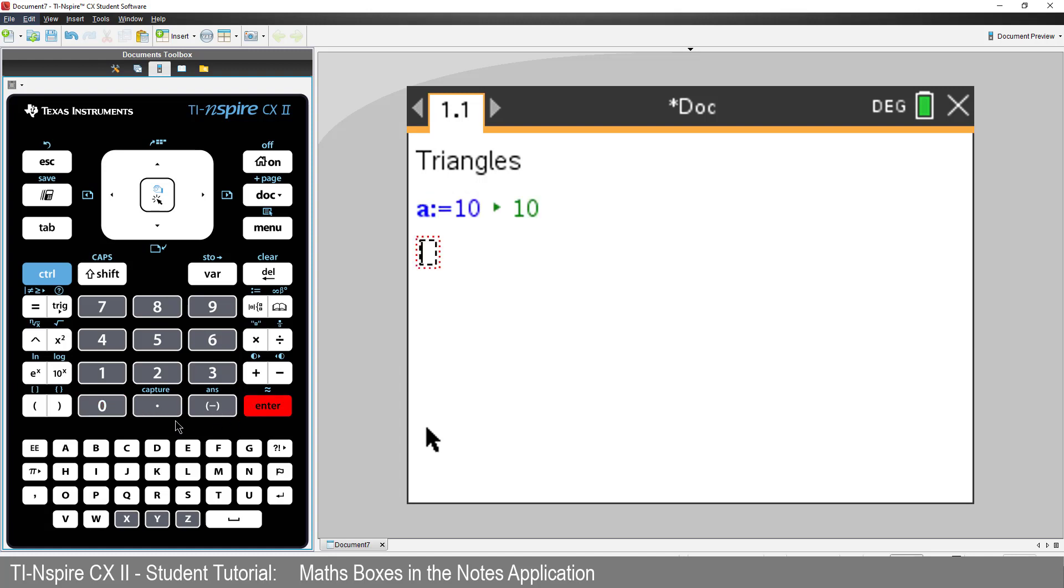This value can also be accessed or used in any other application. For example, you could graph Y equals X plus A, or draw a circle of radius A. For now, we'll just imagine a triangle that has at least one side length equal to 10 units.